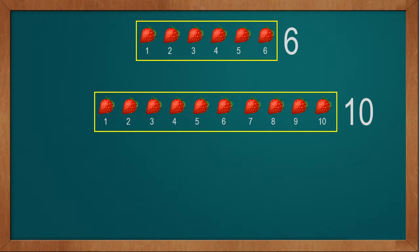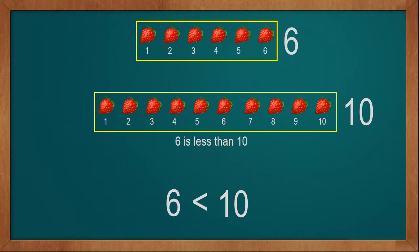We have 6 strawberries and 10 strawberries. We have to compare 6 strawberries with 10 strawberries. Here we see the quantity of 6 is less than 10. That's why we will write 6 is less than 10. We write it as: 6 less-than sign and 10. To compare two numbers, we write 6 smaller-than sign and 10.